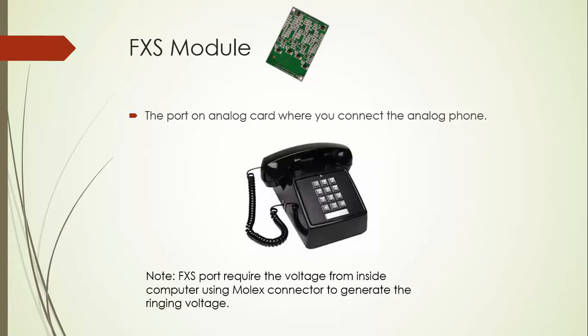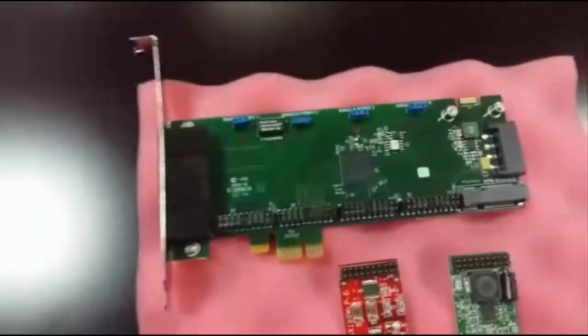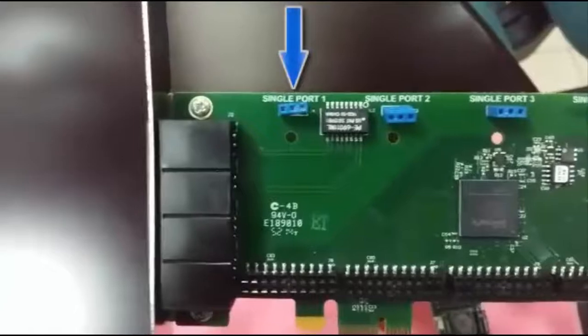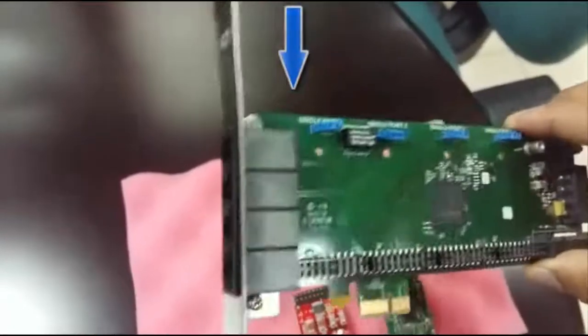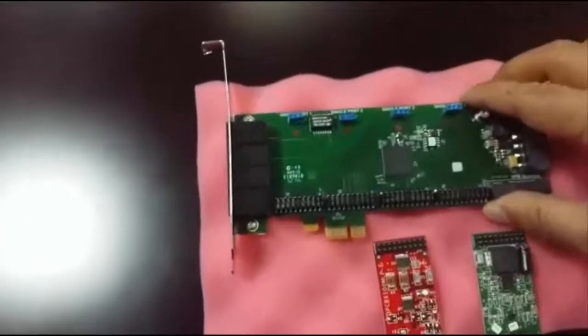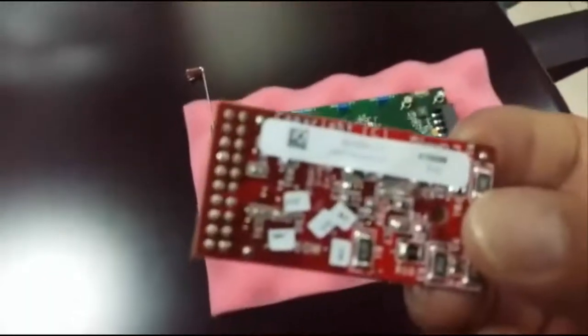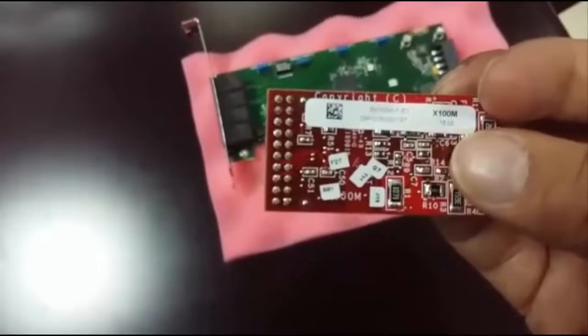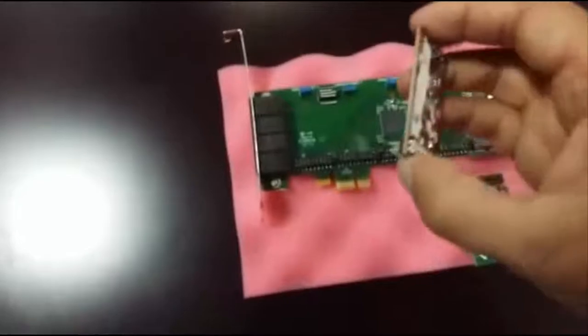Note that the FXS port requires voltage from inside the computer using a Molex connector to generate the ringing voltage. Here I'd like to show you the DGM A4 series analog card. As you can see, the base card has 4 ports, with port numbering starting from the top. What I need to do is install or plug in the FXO and FXS modules. With a maximum of 4 FXO modules, I can connect 4 incoming CO lines from the local phone company.